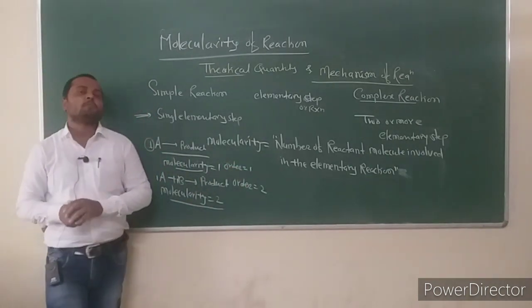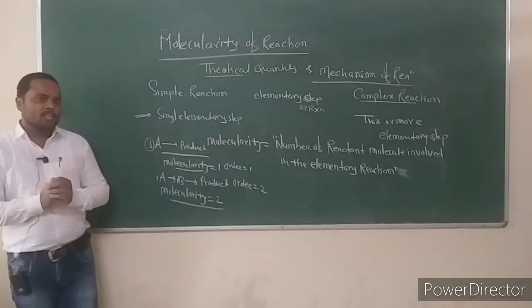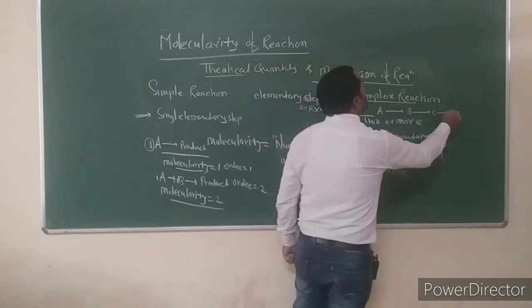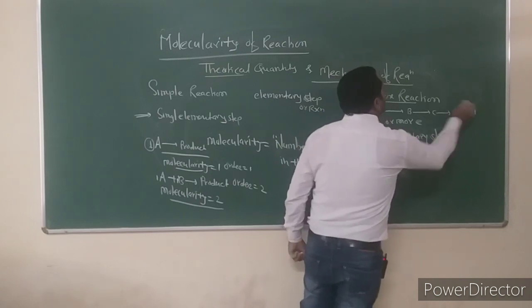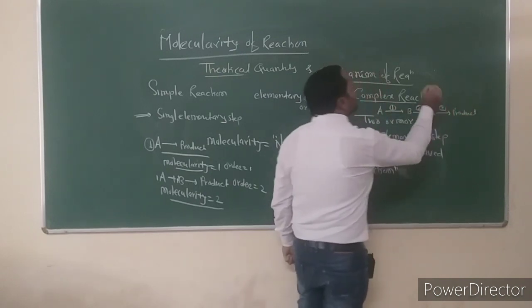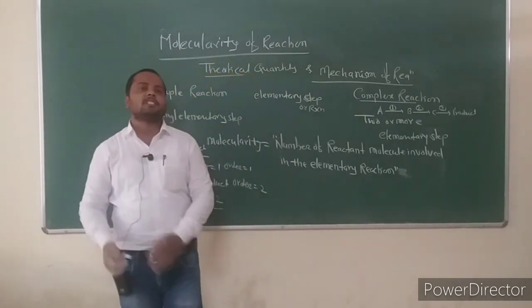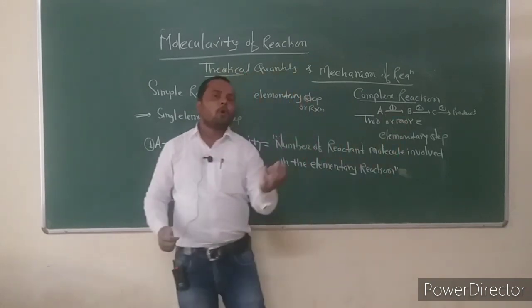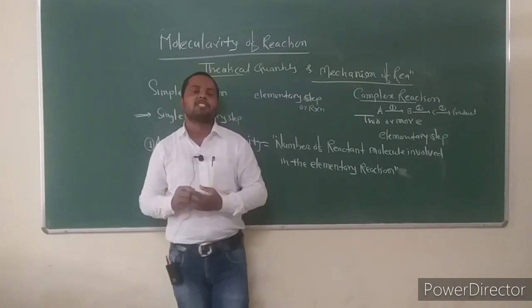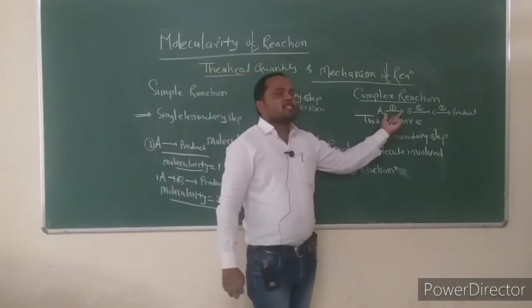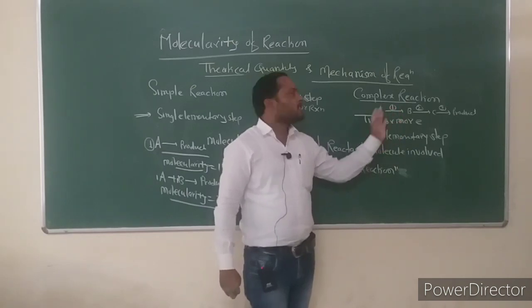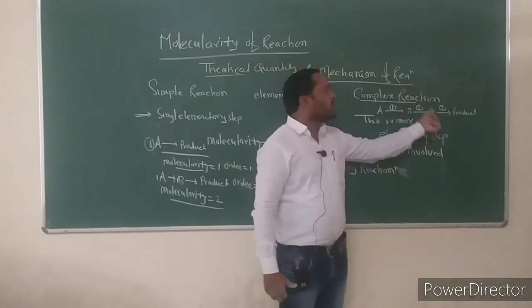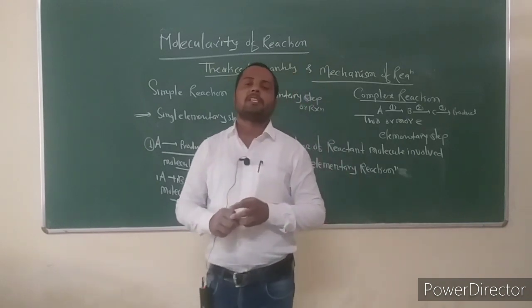In a complex reaction, for example A converts to B, B converts to C, and C converts to product — this reaction involves three steps. Each step is known as an elementary reaction. A reaction that involves two or more elementary steps is known as a complex reaction. The conversion of A to product requires first the conversion of A to B, then B to C, and so on.